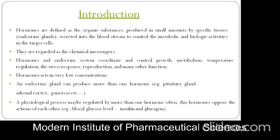Hormones are defined as organic substances produced in small amounts by specific tissues — endocrine glands — secreted into the bloodstream to control metabolic and biological activities in the target cell. They are regarded as chemical messengers. Hormones and the endocrine system coordinate and control growth, metabolism, temperature regulation, the stress response, reproduction, and many other functions.